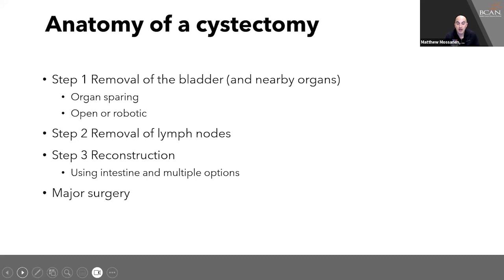Step one, we'll talk about the actual cystectomy — the operation — what it entails in terms of removal of the bladder and nearby organs, divided into male and female. We'll talk briefly about organ sparing and when to consider that, and the difference between open and robotic cystectomy. Step two covers removal of lymph nodes, which is included in the cystectomy. Step three covers the reconstruction that happens after the bladder and lymph nodes are removed, going over commonly used options. The final part emphasizes why this is a life-saving yet life-altering operation requiring major recovery and careful consideration.